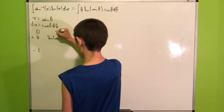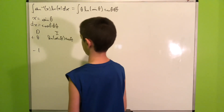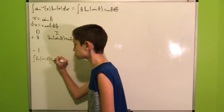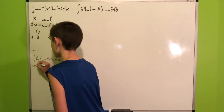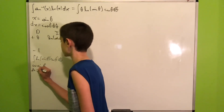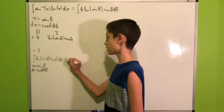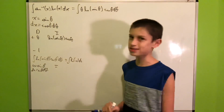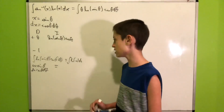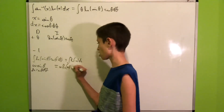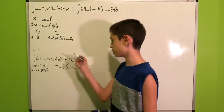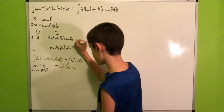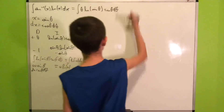Now we'll use integration by parts: we differentiate θ and integrate ln(sin θ)·cos θ. To integrate ln(sin θ)·cos θ dθ, let u = sin θ, so du = cos θ dθ. We get the integral of ln(u) du, which by the 'proof by knowing the answer' method gives u·ln(u) − u. Substituting back, that's sin θ·ln(sin θ) − sin θ.